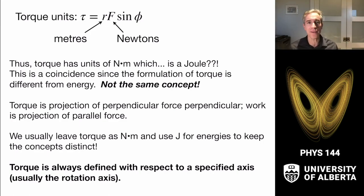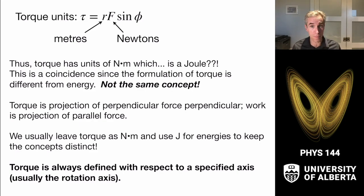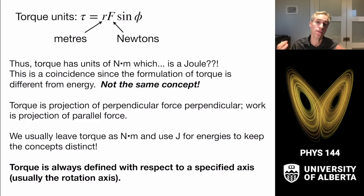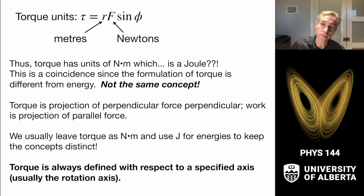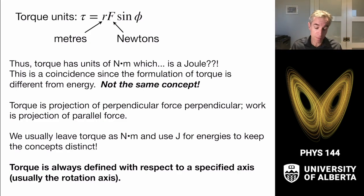If you're an automotive aficionado, you'll hear engines described as providing a certain amount of foot-pounds of torque — that's the same idea: moment arm times force. That's the imperial unit for torque. Since we're in North America, engine specs use imperial values. We leave newton meters of torque distinct from joules of energy.